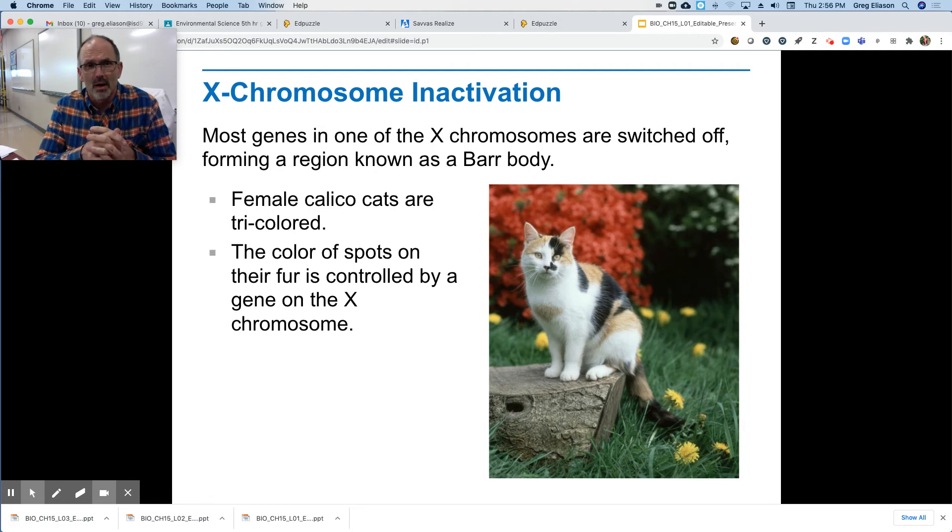Most genes, and so we have this thing where the X chromosome inactivation. So most genes in one of the X chromosomes are switched off, and the genes then are expressed from the other X chromosome. Because if they're both going all the time, you know, XX, then that could be a problem. So when they're switched off, they form a region called a Barr body.